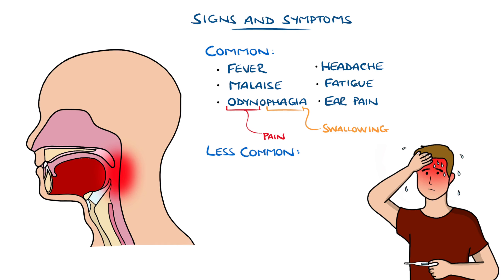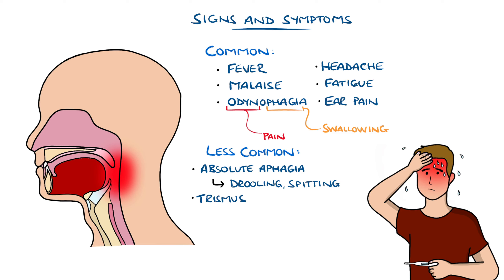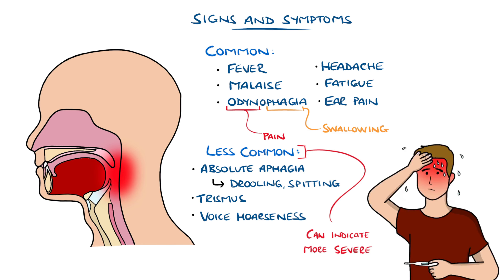In uncommon cases, a sore throat can be complicated and lead to an absolute inability to swallow, either due to pain or even due to physical obstruction. This is called absolute aphagia, which can manifest with drooling or spitting out of saliva. Another symptom is trismus, which is limitation in opening the mouth that can suggest an abscess, and voice hoarseness or hot potato voice, meaning talking as if a hot object was in the mouth.